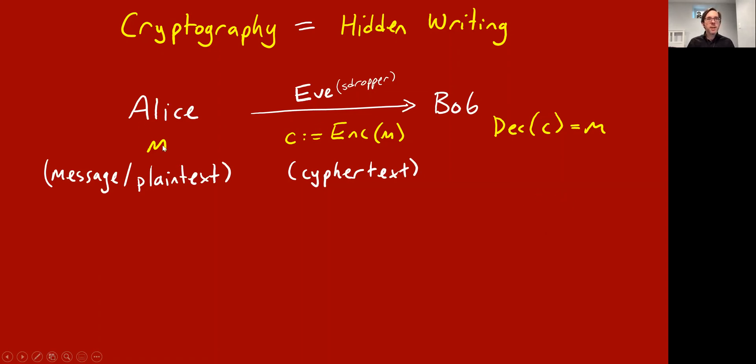The setup is Alice has a message M, sometimes called the plain text. Imagine it's just a bit string, and then it gets encoded by some encoding map producing another bit string C, which is called the ciphertext. And we want that Bob is able to decode the ciphertext and get the message back, but we're concerned about Eve learning something about the secret message.